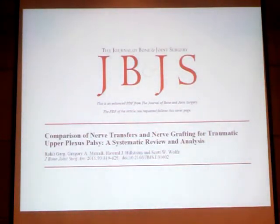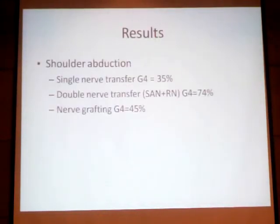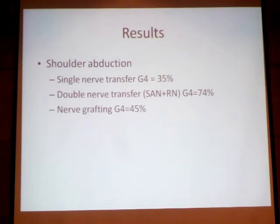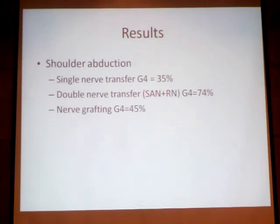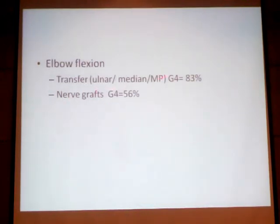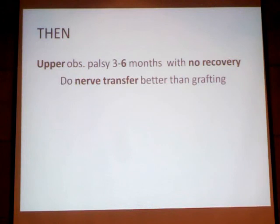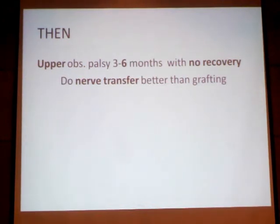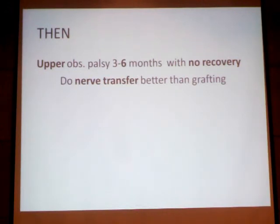Comparing nerve transfer and nerve grafting outcomes: a 2011–2012 study showed that single nerve transfer achieved MRC grade 4 in over 35% of cases, while double nerve transfer achieved 74% grade 4. Original nerve grafting achieved approximately 45%. During management in the early 3–6 month window with no spontaneous recovery, nerve transfer from donors such as intercostal and spinal accessory nerves showed superior results compared to nerve grafting.